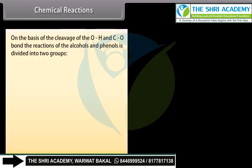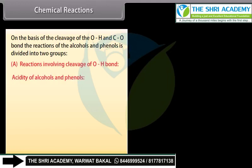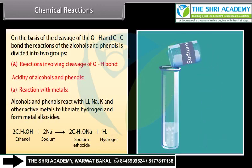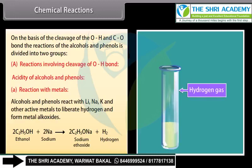On the basis of the cleavage of the OH and CO bond, the reactions of the alcohols and phenols are divided into two groups: reactions involving cleavage of OH bond, and acidity of alcohols and phenols. Alcohols and phenols react with lithium, sodium, potassium and other active metals to liberate hydrogen and form metal alkoxides.